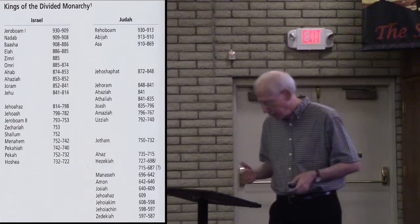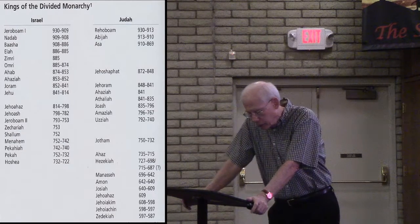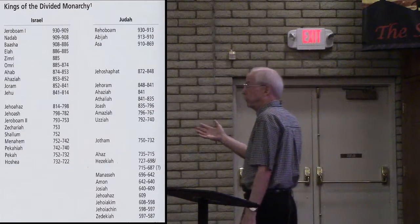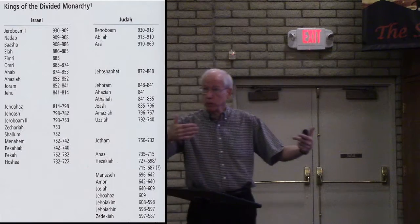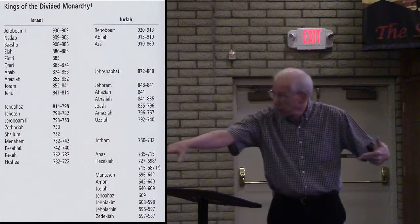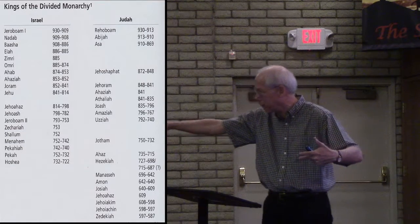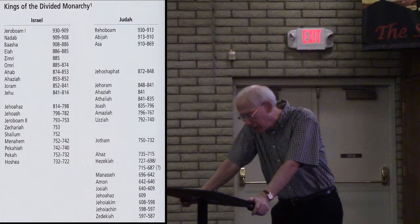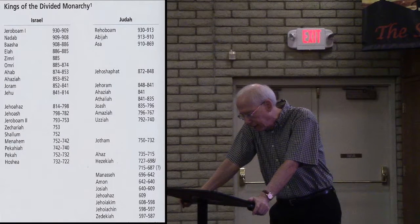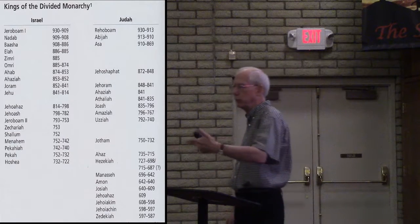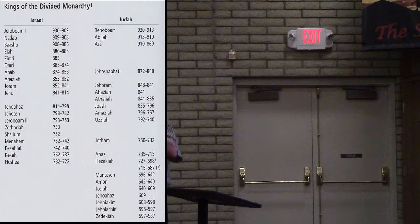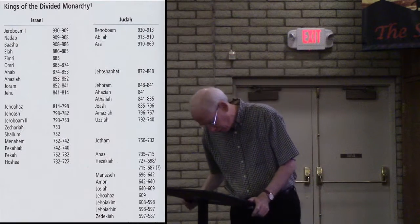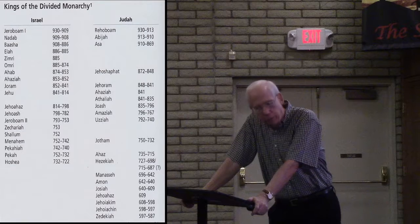When Jehoram became king, he slaughtered his six brothers to eliminate them as competition. This was a rough world — politics was rough business. This person becomes king, sees his brothers as potential threats, and slaughters them all. He was, as you can imagine, a bad king — one who walked in the ways of the kings of Israel, and when you hear that about a king of Judah, that is not a compliment.